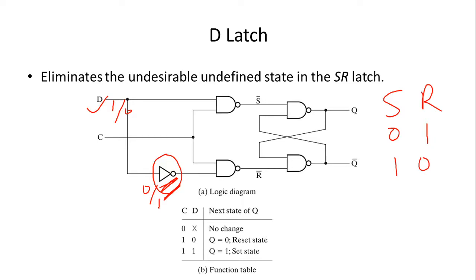For NAND gate implementation, the unwanted input was 1-1. In the D latch, if we want to set, then reset will automatically be 0. But if we want to reset, our input is 0 and the second input would be 1.